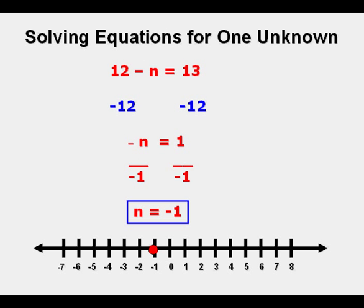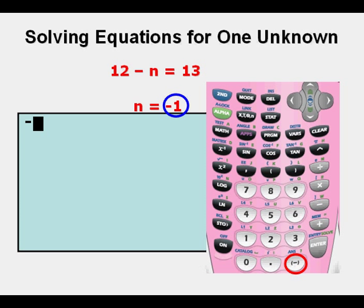To check the answer, put the answer in the calculator by pressing the negative sign first, then enter the 1, store for n by pressing the STO key or storage key on the left side of the keypad, then enter n by pressing the alpha key first, and then press the log key on the left side. It has the green n above it, and then press enter.